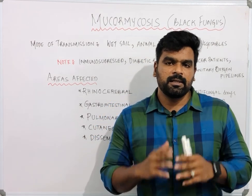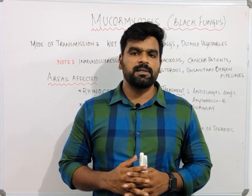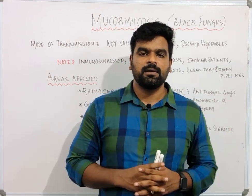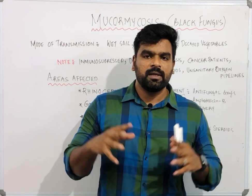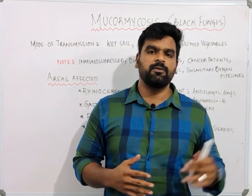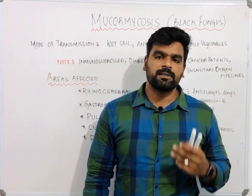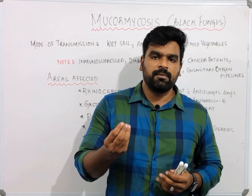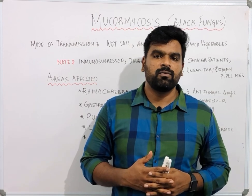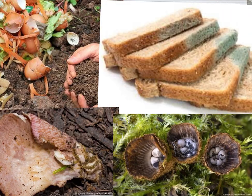It is usually seen in wet areas — wet soil, decayed vegetables and fruits, and cow dung. Areas which are not sanitized properly are at high risk of developing this infection, as are areas with unsanitized oxygen pipelines where the fungus may grow. Normally this fungus grows everywhere surrounding us.